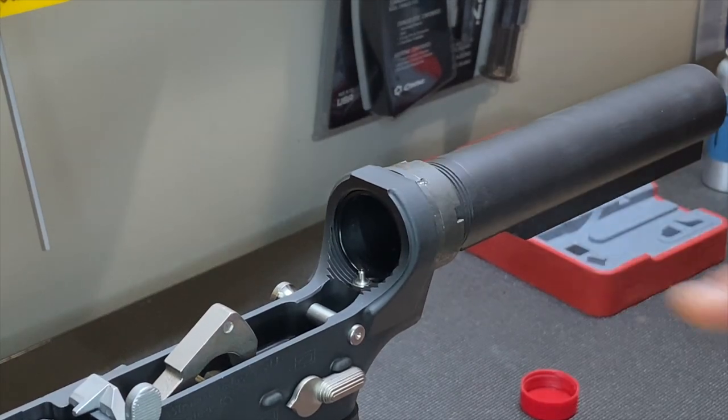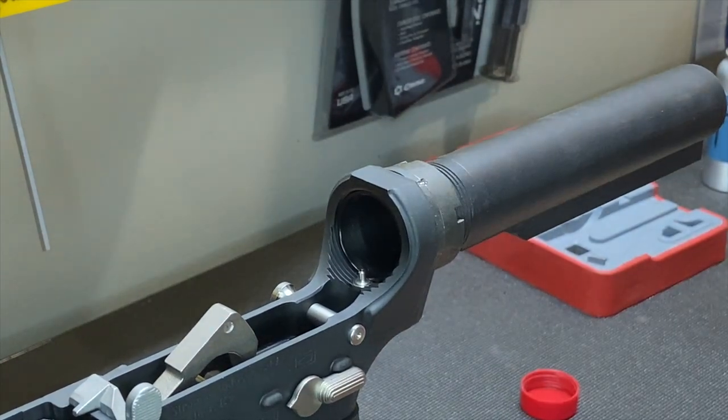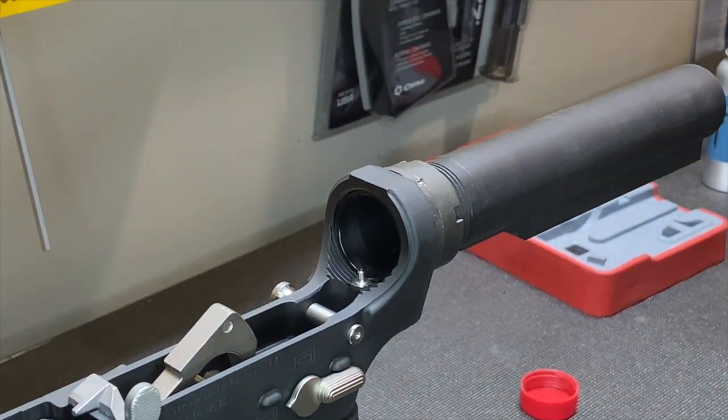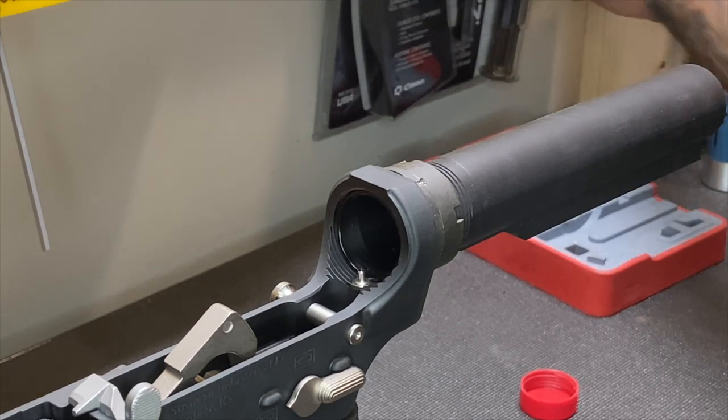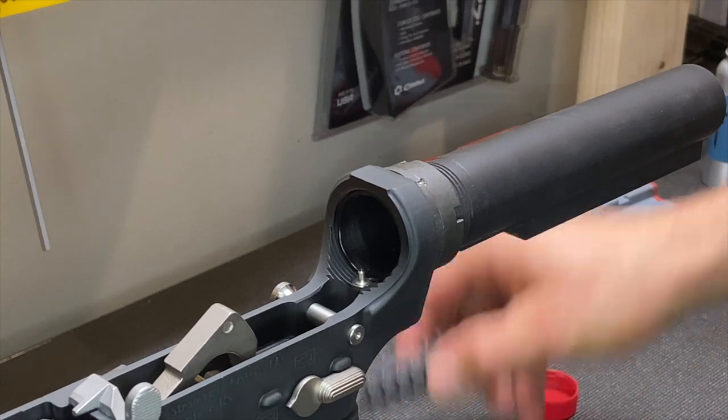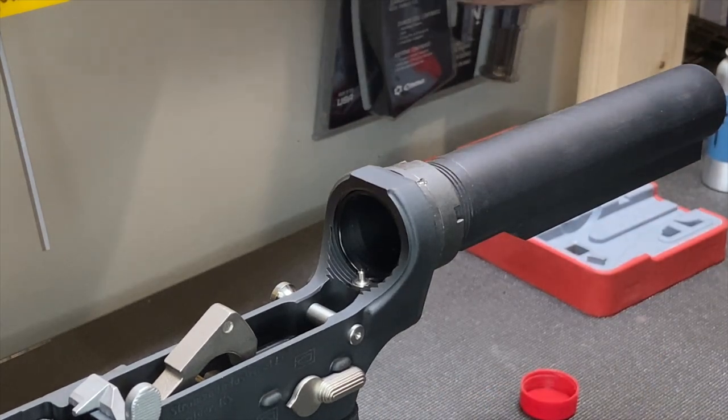Do this properly, stake it. Do not use Loctite, it's not necessary and it usually makes it too tight. It will not come undone if you properly stake your buffer tube.